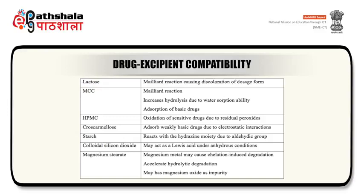Few very common examples of incompatibilities in pharmaceutical excipients: lactose undergoes Maillard reaction causing discoloration of the dosage form. Microcrystalline cellulose can undergo Maillard reaction, increase hydrolysis due to water sorption ability, and also adsorbs basic drugs. HPMC causes oxidation of sensitive drugs due to residual peroxides. Cross carmellose sodium adsorbs weakly basic drugs due to electrostatic interactions. Starch reacts with hydrazine moiety due to its aldehydic group. Colloidal silicon dioxide may act as a Lewis acid under anhydrous conditions. The magnesium metal in magnesium stearate may cause chelation-induced degradation, accelerate hydrolytic degradation, and magnesium stearate can also contain magnesium oxide as an impurity.